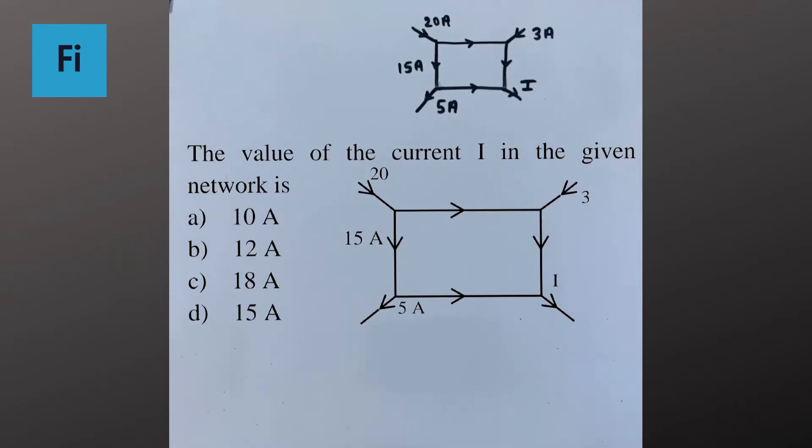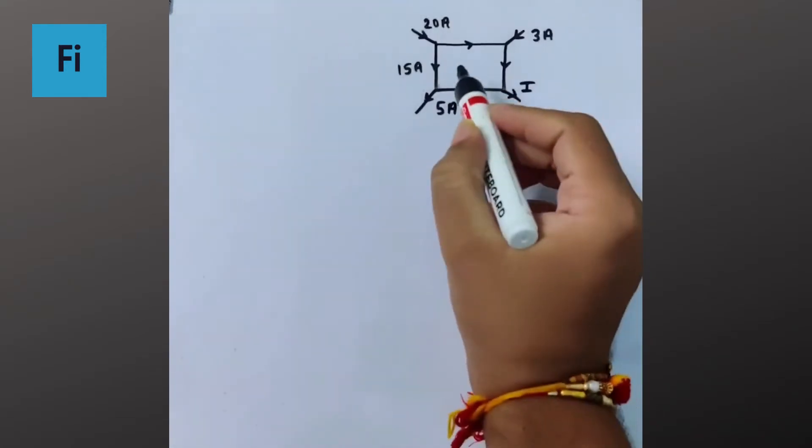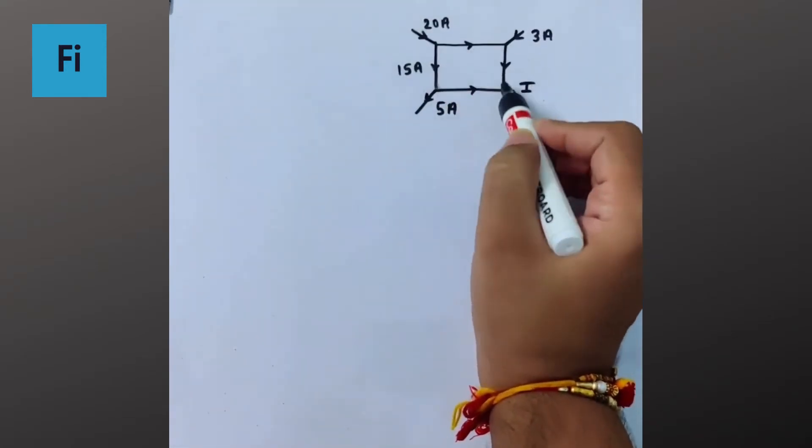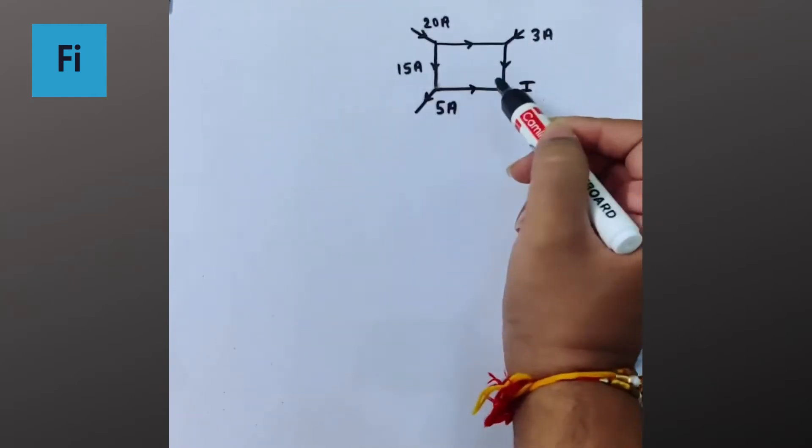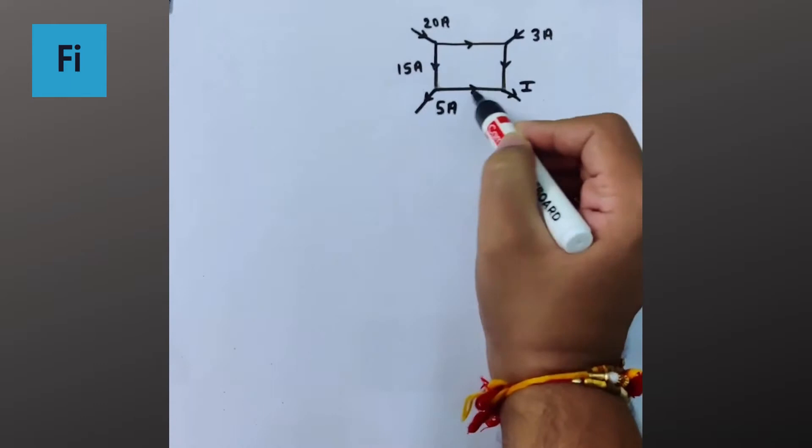The question says the value of the current i in the given network is. Now first of all we need to understand that this rectangle or square given here, we can consider it as one junction because the current coming in here will equal the current going out.